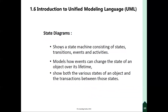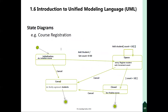In a State Diagram, we can see the states of objects. Some objects exist in one state or another state. At the same time, there can be significant state changes. For example, if you have a student object, you can see the state of the student. There is a state diagram for each object.